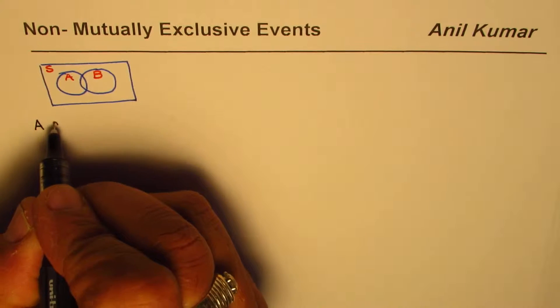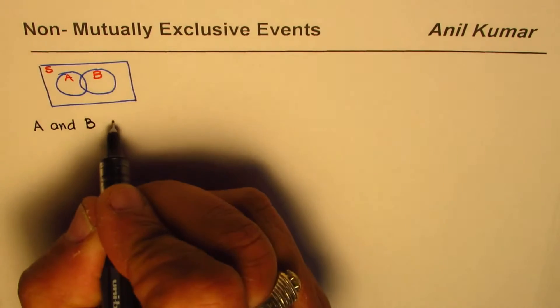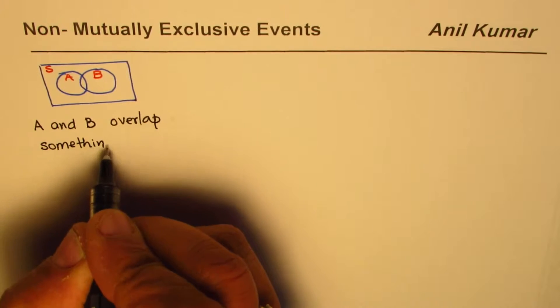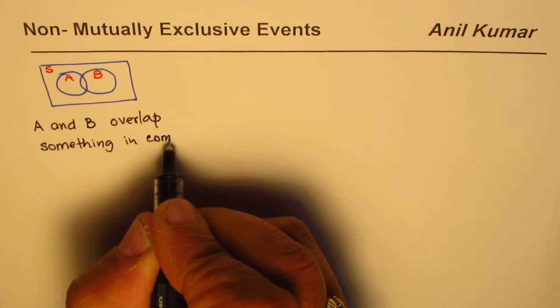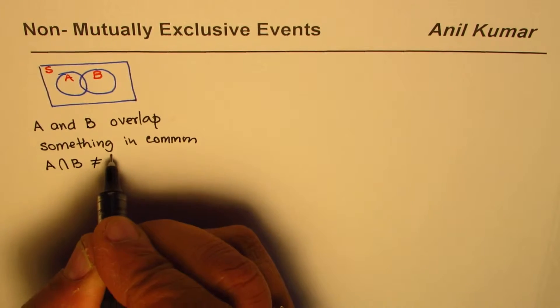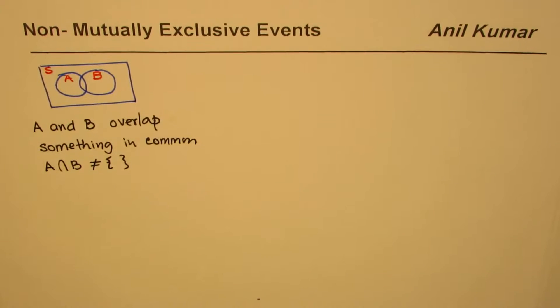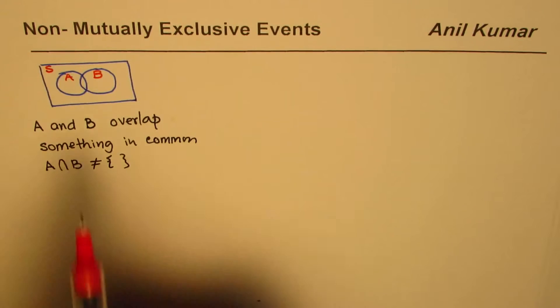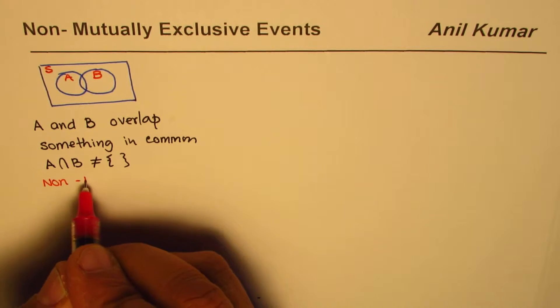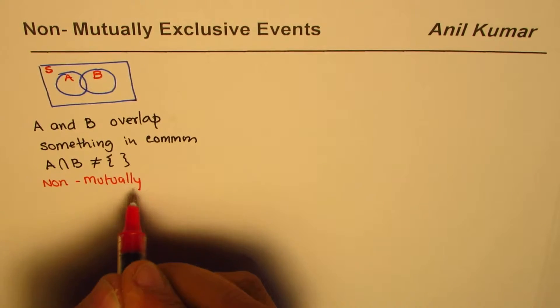This portion which is overlapping will be the intersection of event A and B. What we observe here is that event A and B overlap, so they have something in common. We can say that the intersection of set A and B is not a null set - there is something in it. In that case we say that these two events are non-mutually exclusive.